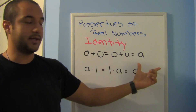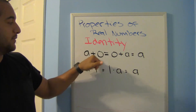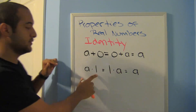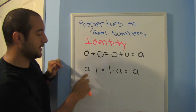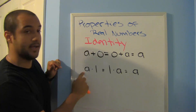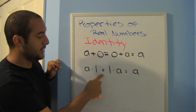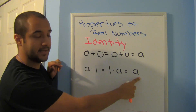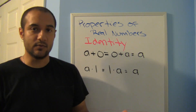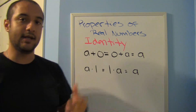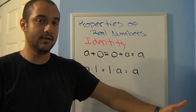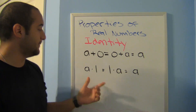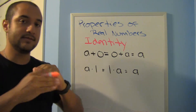So you can just say a plus zero is a. For multiplication, use one instead of zero: a times one equals one times a equals a. Same thing with age — I don't say I'm 29 times one, I just say I'm 29. Technically correct, but identity stays the same.